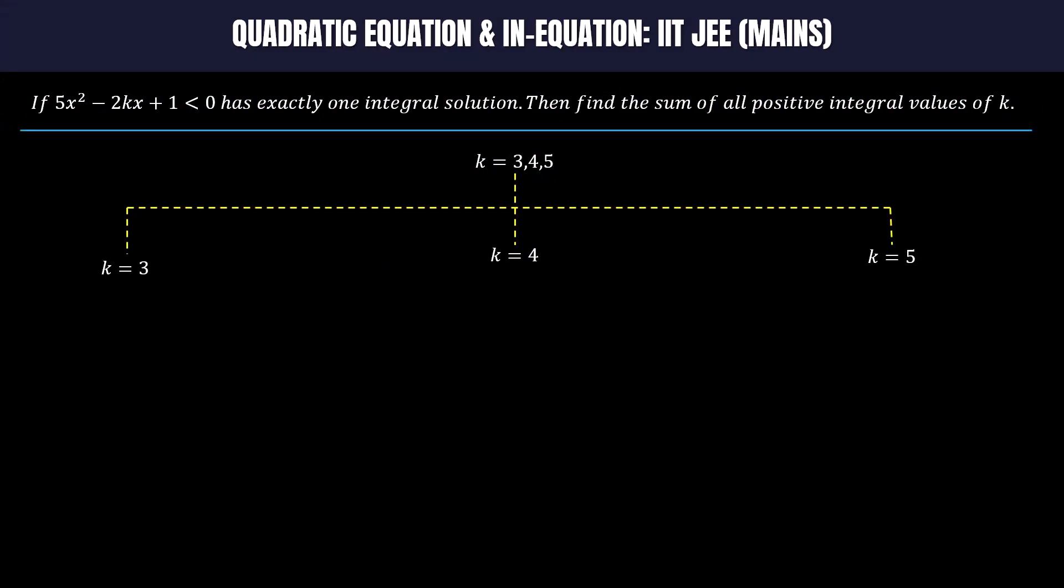The first one is 5x² - 6x + 1 < 0. The second one is 5x² - 8x + 1 < 0. And the last one is 5x² - 10x + 1 < 0.